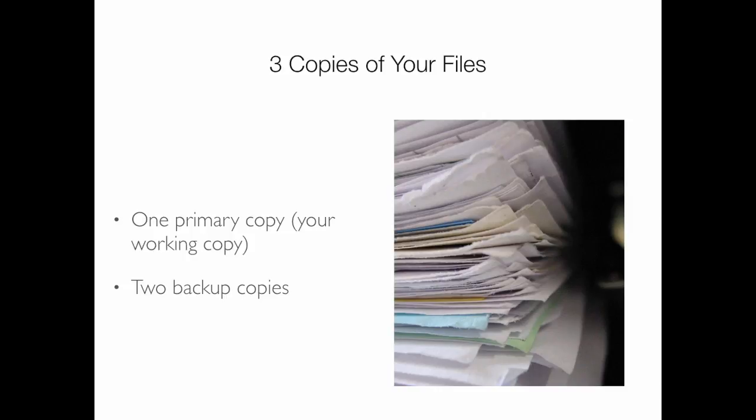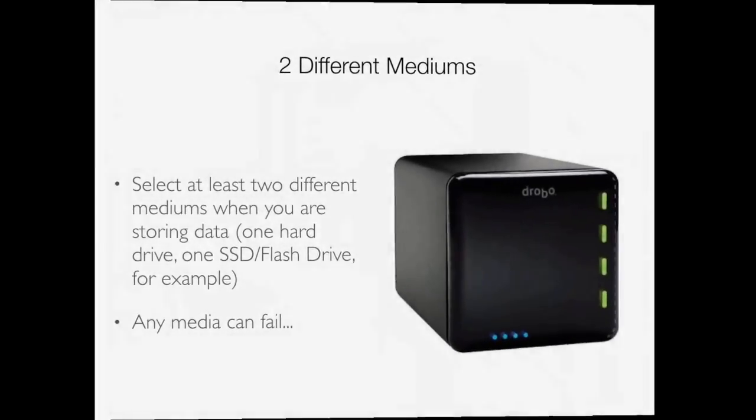The most important thing I'm going to talk about today is backup. How many people regularly back up their computer files? Out of 33 people in this room, two raised their hands — that's really scary. I borrowed these principles from a multimedia guild called the Pixel Core in San Francisco: your files are not safe unless you have three copies. Three — not one, not two. You should have the one primary copy you're working on and two backups. That's the 3-2-1 rule: three copies, two different media, one not with you.